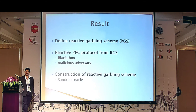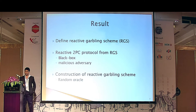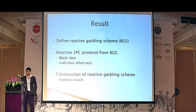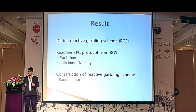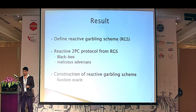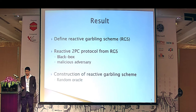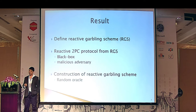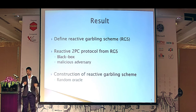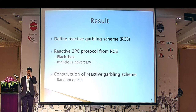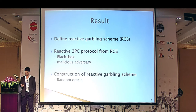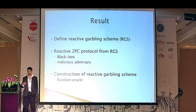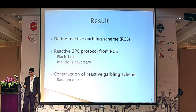In this presentation, I'm going to talk about our results. Our result has three main things: first, we define reactive gobbling schemes. Then, we can show that using reactive gobbling schemes, we get reactive two-party computation from reactive gobbling schemes, and it's black box against a malicious adversary. One thing to note is that previous protocols for 2PC don't actually use gobbling schemes in a black box manner — they have to use white box details about the gobbling scheme to actually get security. We also have a result that we can construct reactive gobbling schemes in the random oracle model, but for this presentation I'm not going to go into that.